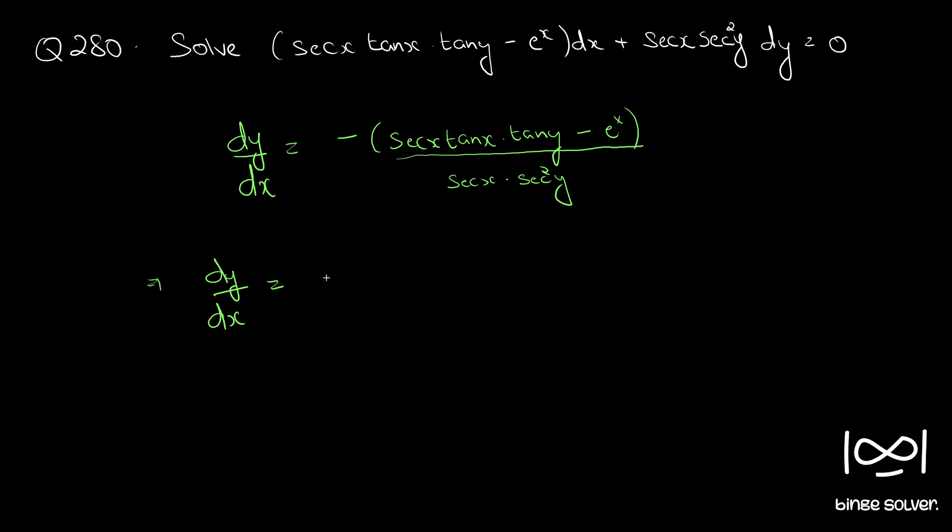sec x cancels to minus tan x into tan y by sec square y.